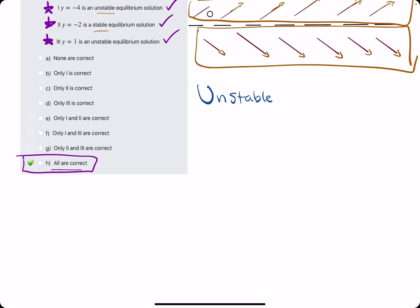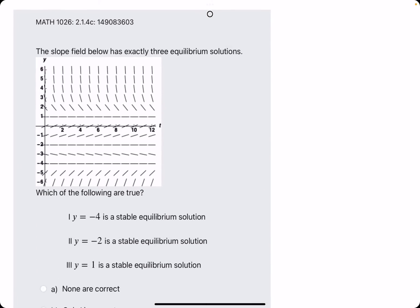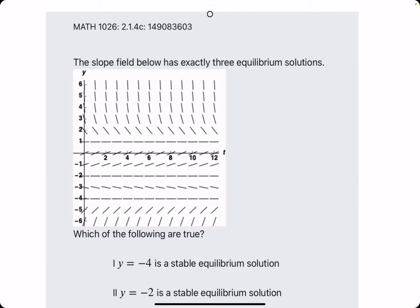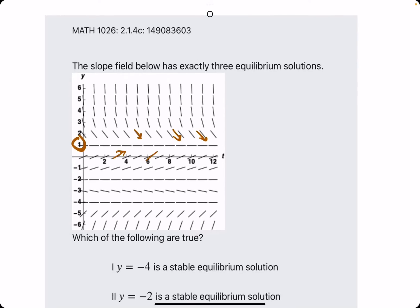Alright, let's do one more example. Again, let's go ahead and label all of them. We have y equals 1. These lines are going towards y equals 1 on top and on bottom. So, this is a stable solution.